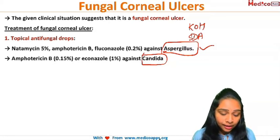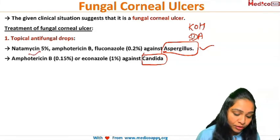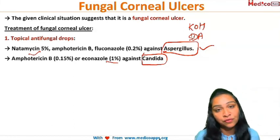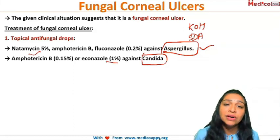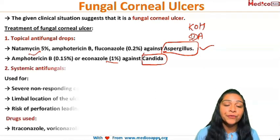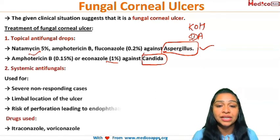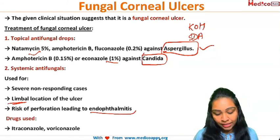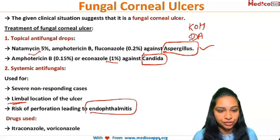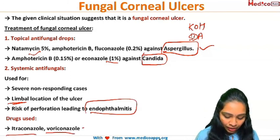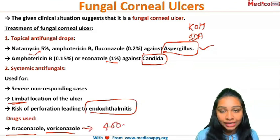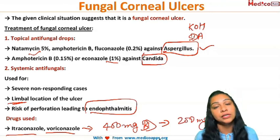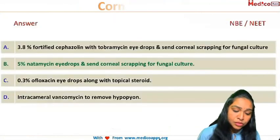When Candida is the diagnosis, we go for Amphotericin B eye drops at a concentration of 0.15% or Econazole at 1%. However, when local therapy is ineffective — especially when the ulcer is at the limbus, due to risk of fungal endophthalmitis from perforation — we go for systemic therapy. The oral drugs given are Itraconazole and Voriconazole, usually at 400 mg BD, tapered to 200 mg BD depending on patient response.